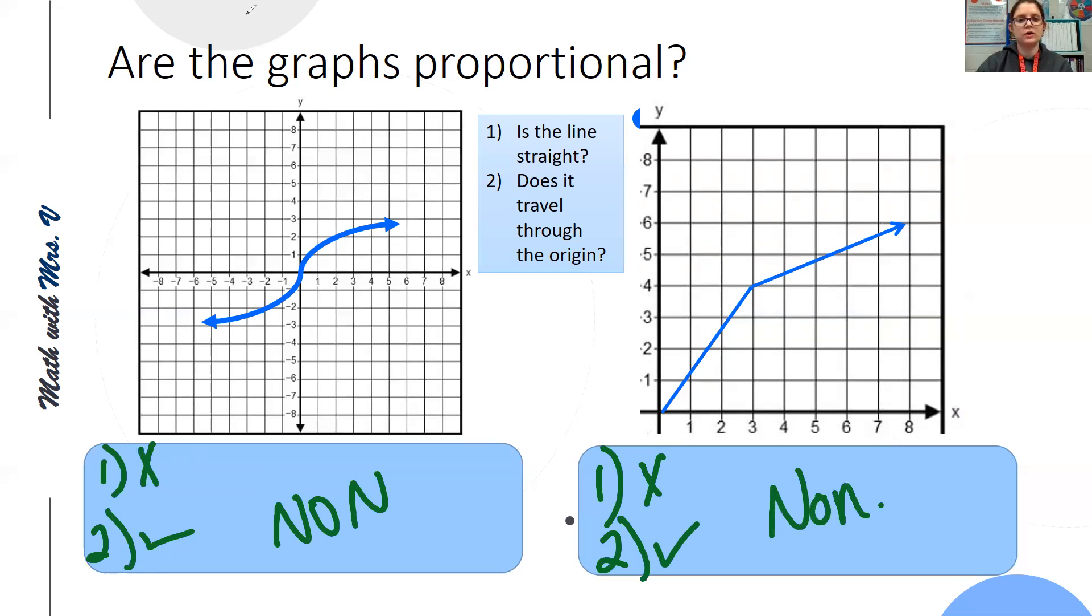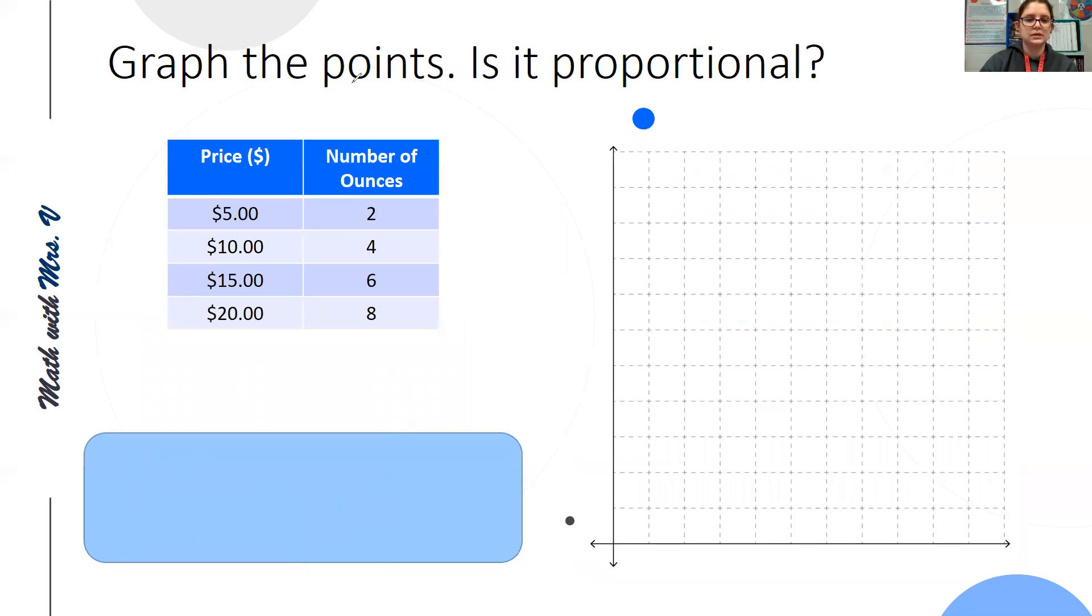So let's try building a few graphs of our own and seeing if they're proportional or not. So the first thing we need to do is label our graph. I'm going to put price along the side and ounces along the bottom. And so we have enough room, I'm going to just label my even numbers. This counts by five, so I'm going to count by fives, but I'm going to skip lines so I have more space. So five, 10, 15, 20, 25.